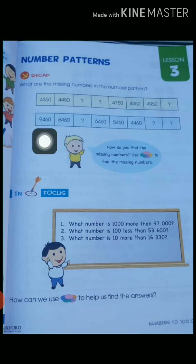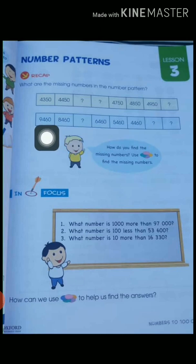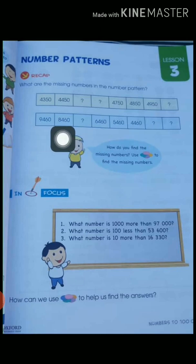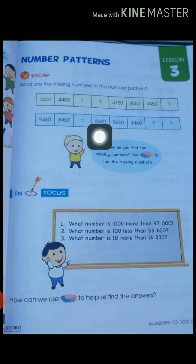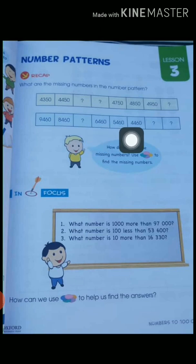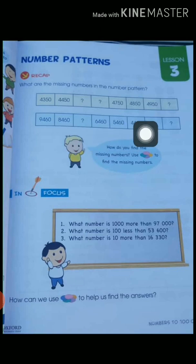First we check which rule this number pattern follows. The first number is 9,460, the second number is 8,460. Similarly the other given numbers are 6,460, 5,460, and 4,460.